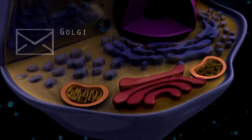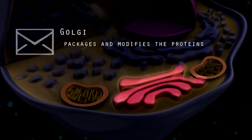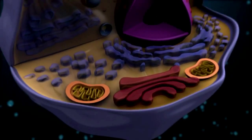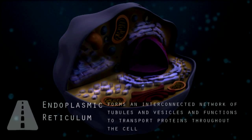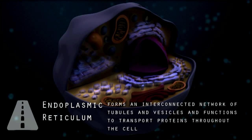The Golgi functions as the post office in the cell and packages and modifies the proteins. The endoplasmic reticulum is the highway of the cell. It forms an interconnected network of tubules and vesicles and functions to transport proteins throughout the cell, so those protein-containing vesicles would be like the trucks on the highways of our city. Many of the protein-producing ribosomes are located on the endoplasmic reticulum.